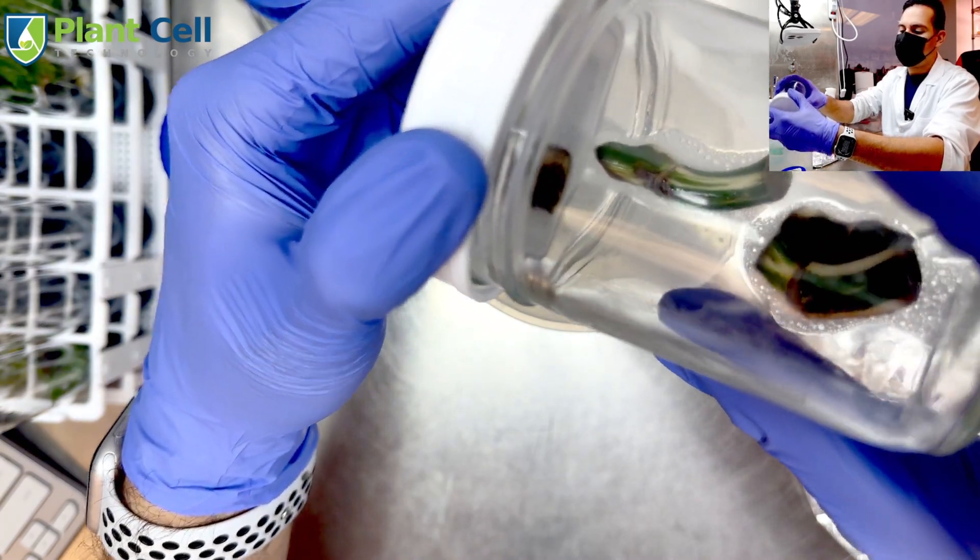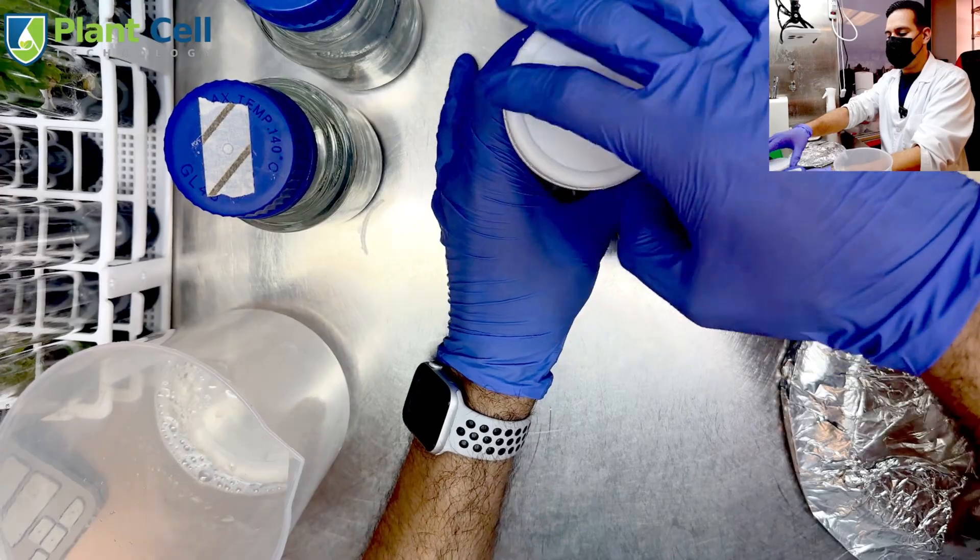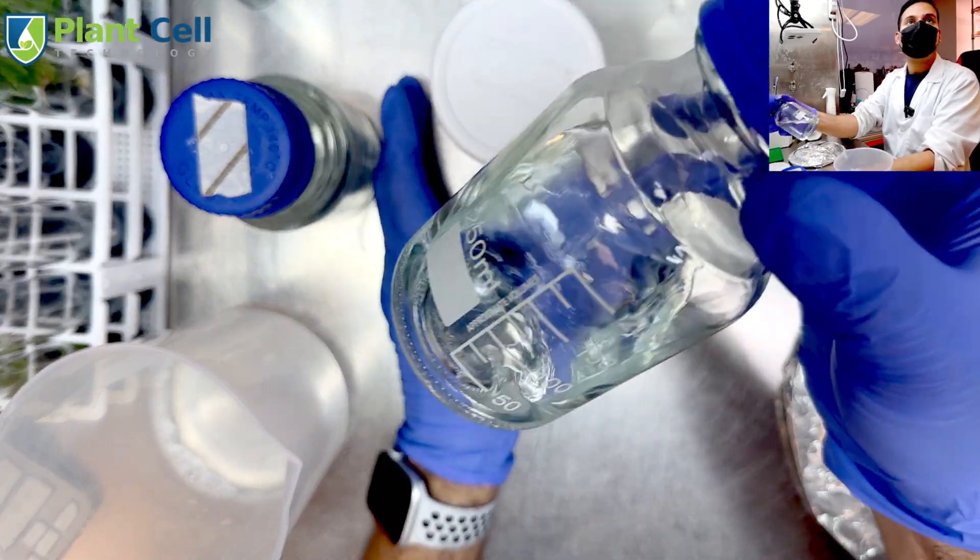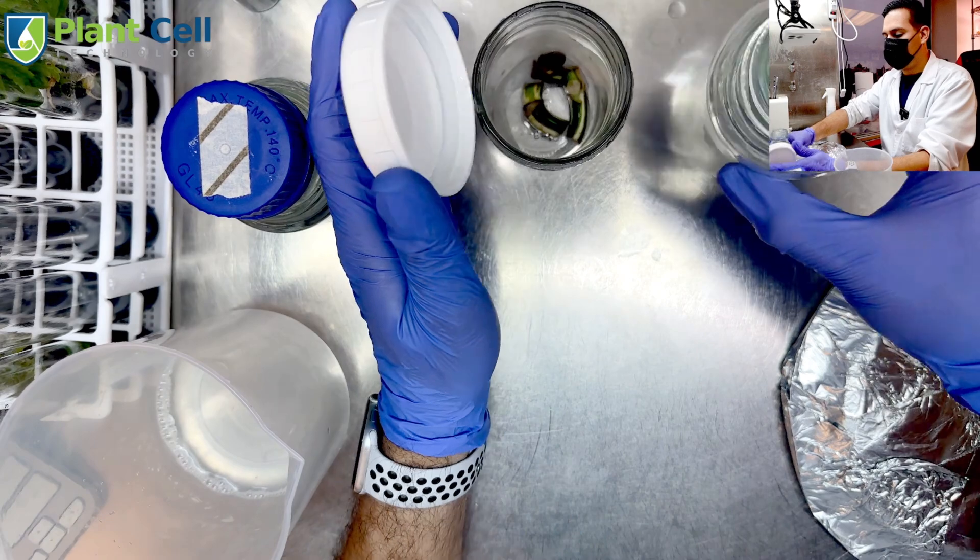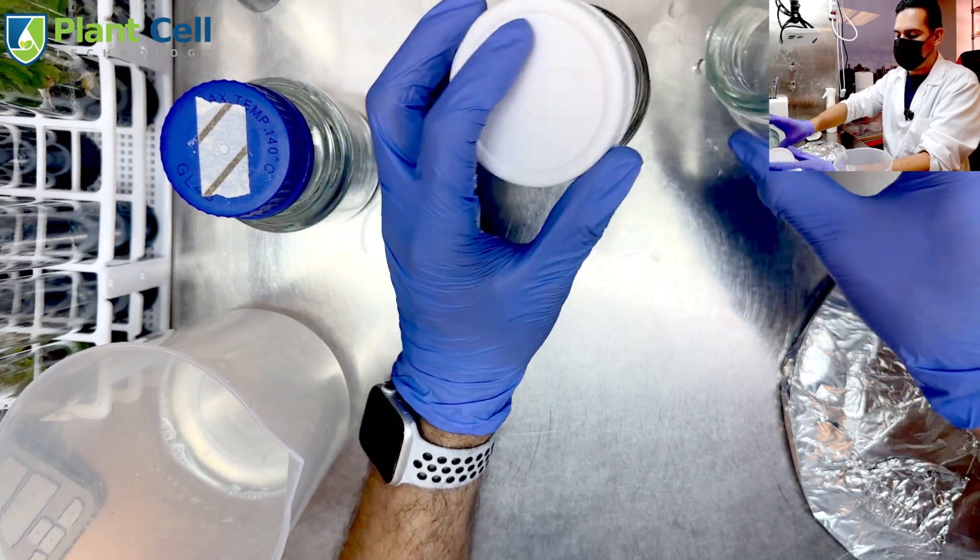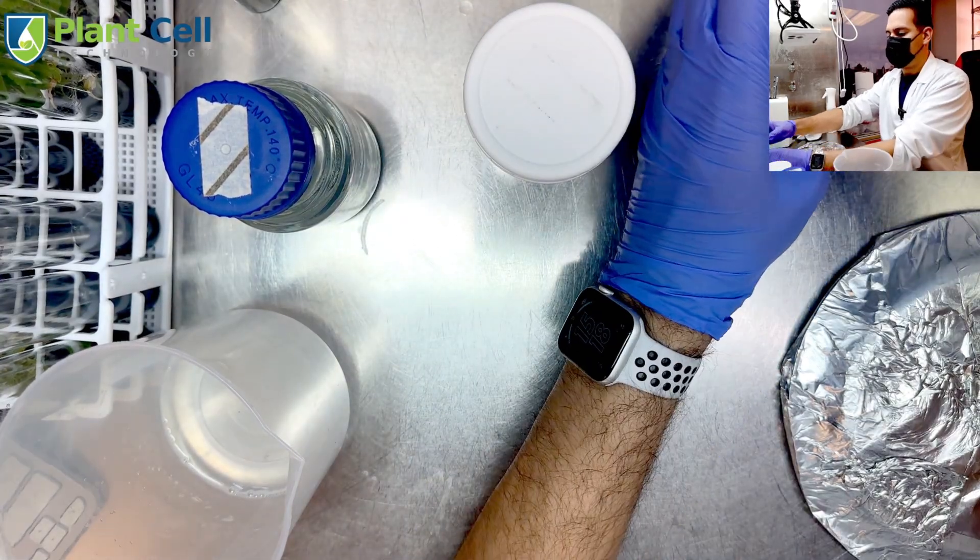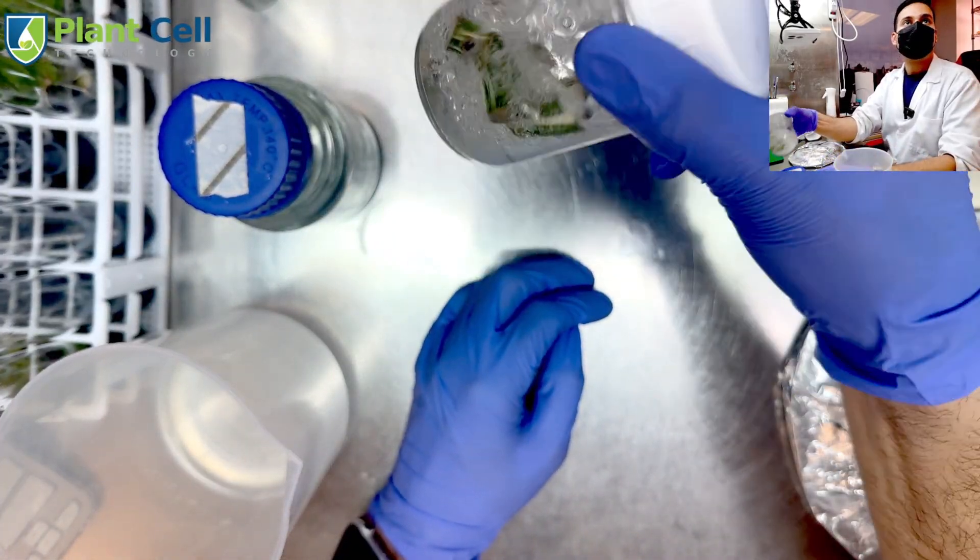Bleach, remove the bleach. Next I take sterile distilled water to rinse the plants, and I want to rinse the plants three times.